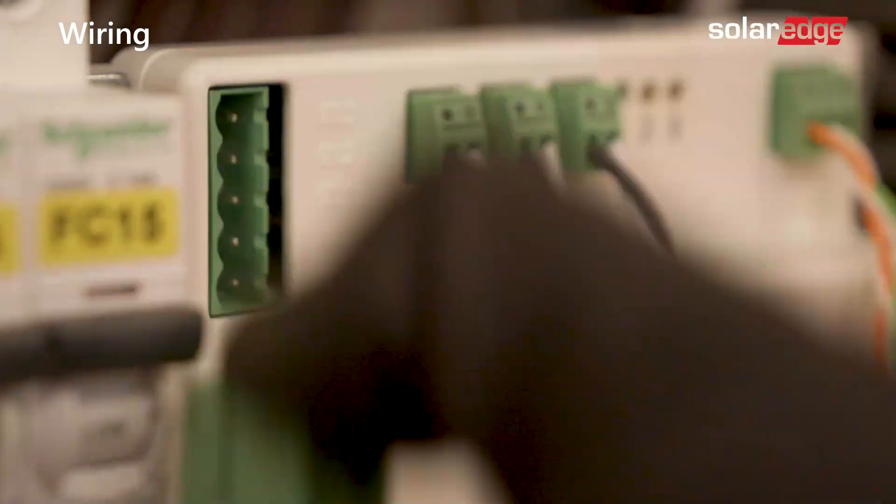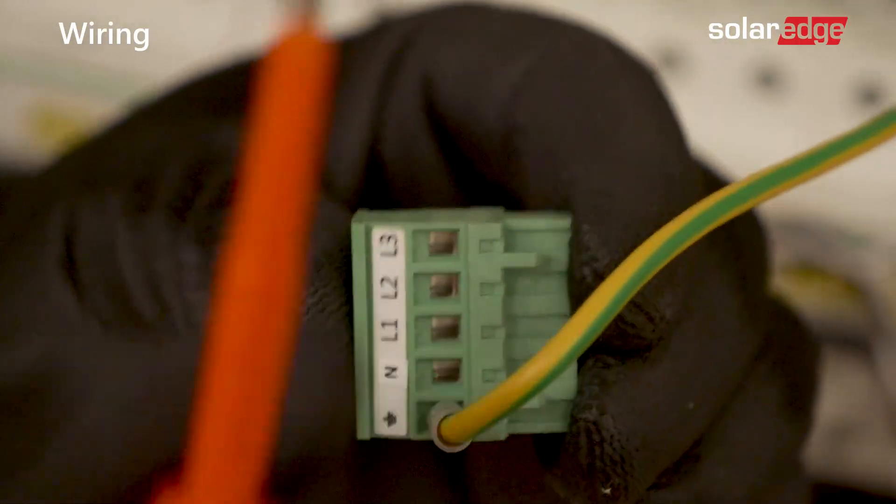Now, connect the voltage phases wires to the meter. Make sure they correlate to the correct phase.